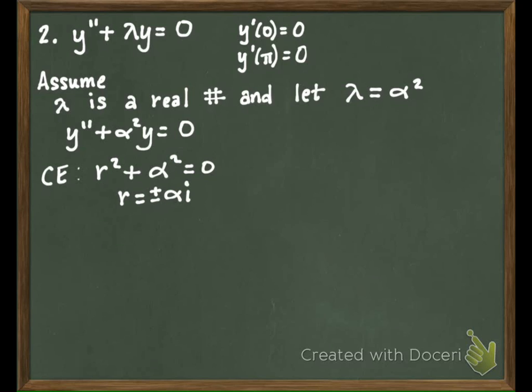So what would our solutions look like? A combination of sine and cosine. So we would have A cosine alpha x plus B sine alpha x. Everybody clear on where this comes from?